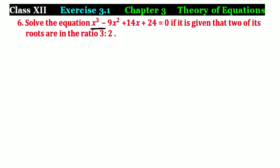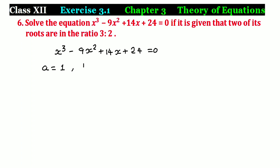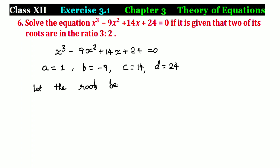One cubic equation is given, so it has 3 roots. Two of the roots are in the ratio 3 is to 2. We have 3 roots. Given: x³ - 9x² + 14x + 24 = 0. In the equation, a = 1, b = -9, c = 14, d = 24. Let the roots be 3λ, 2λ, and γ.